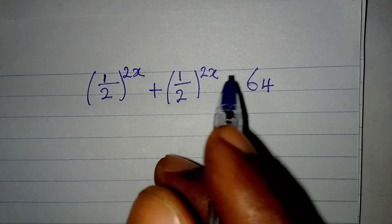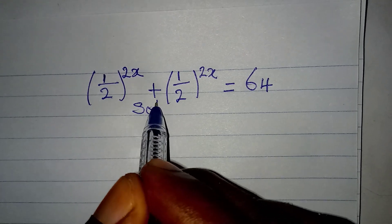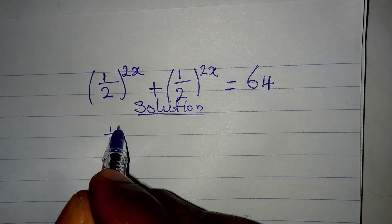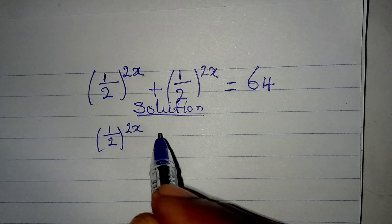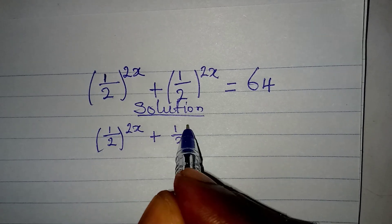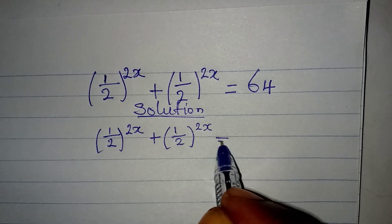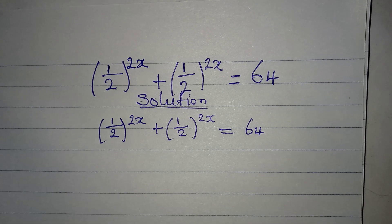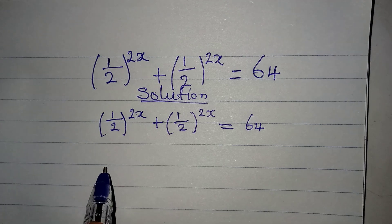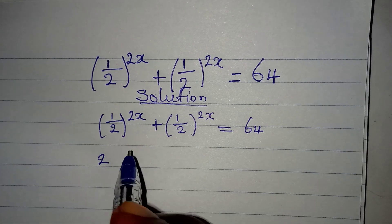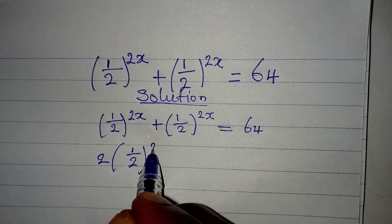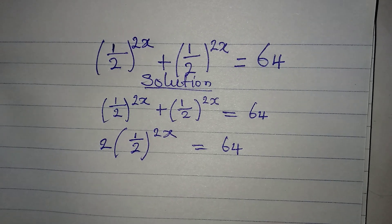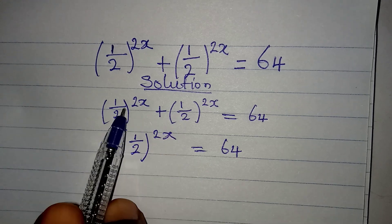Hello everyone, let's solve this problem very quickly. The equation is 1 over 2 to the power of 2x, plus 1 over 2 to the power of 2x, equal to 64. So how do we deal with this? The first step is to multiply by 1 over 2 to the power of 2x, because we have the same term appearing in two places.